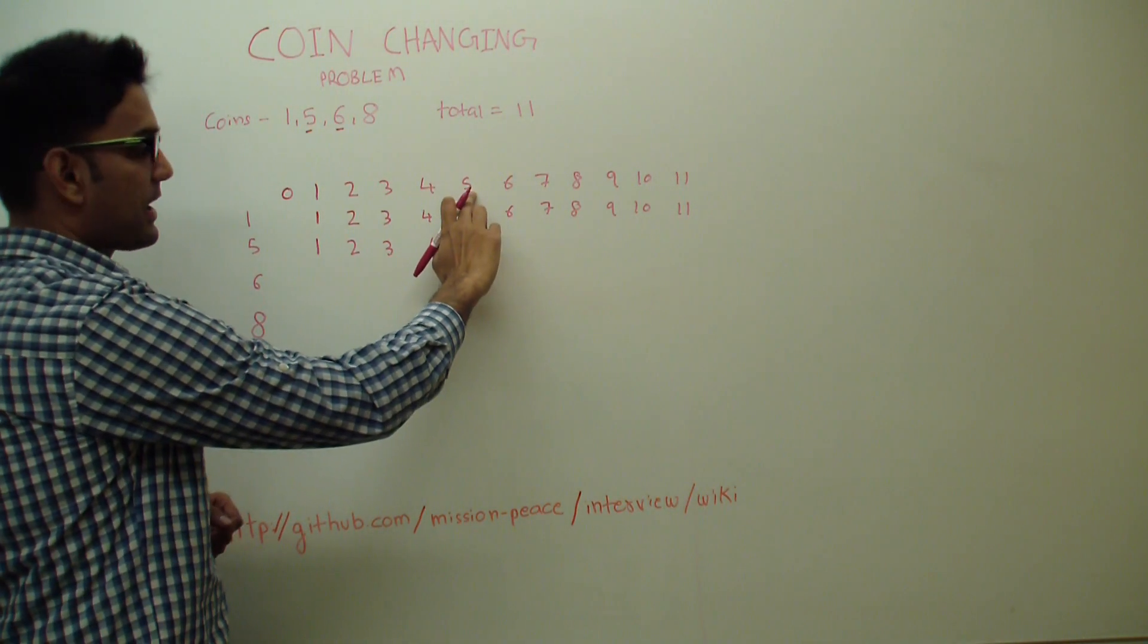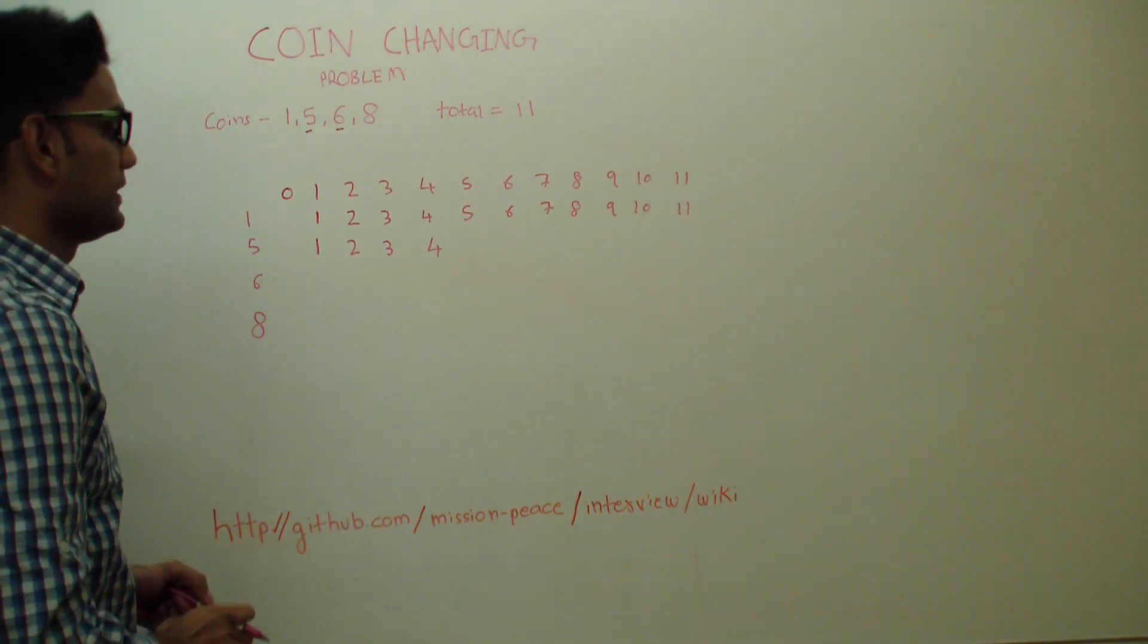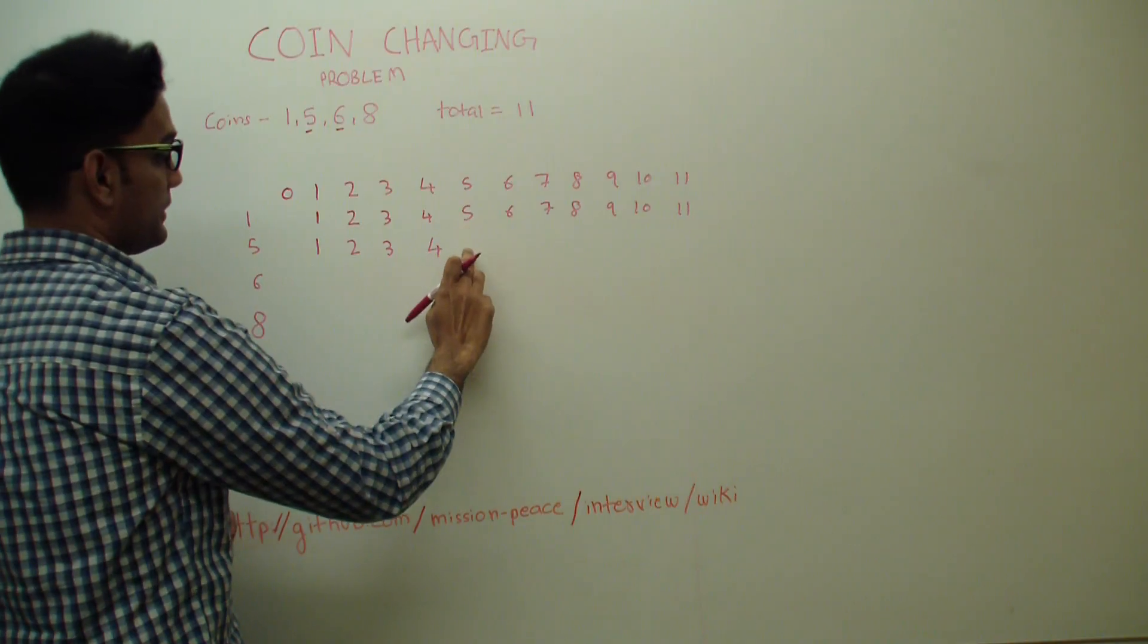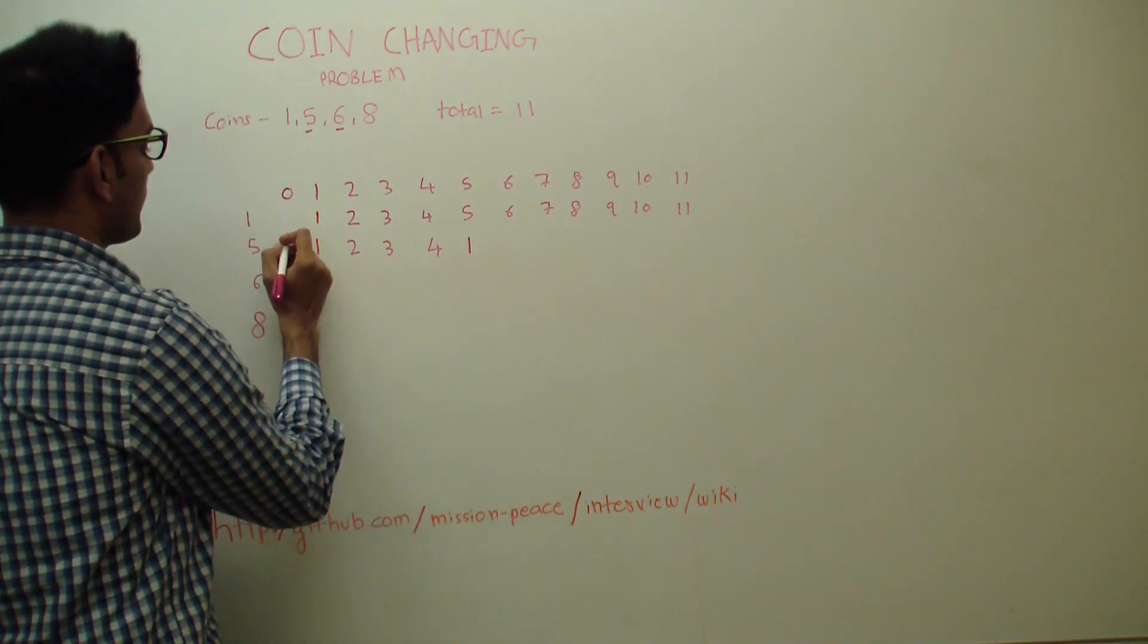Now if you want to get 5 and if you have 2 coins, 1 and 5, what is the minimum number of coins we'll need? We'll not need 5. We'll need 1. We'll just need 1 coin of 5.